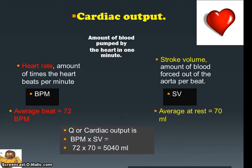So how we actually work out cardiac output — also known as Q — is beats per minute times the stroke volume. In this instance we've got 72 beats per minute times 70 millilitres, which equals 5,040 millilitres, or in other words around about 5 litres. That gives you your average cardiac output at rest. That's going to change quite dramatically when we're doing exercise, but we'll look at that at a slightly later stage.